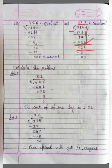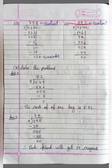8 threes are 24. 24 minus 24 is equal to 0. So our quotient is 893. Now, question D: Solve the problems.